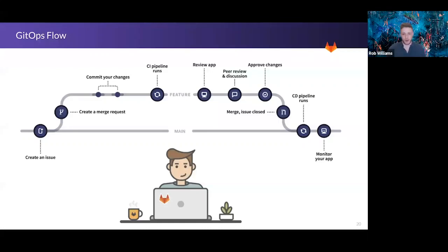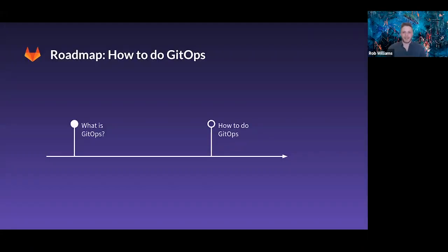The merge request allows for collaboration, peer review, discussion, and ultimately that gate of approval. After passing the review gate, you merge back into the branch, changes get enacted automatically onto the infrastructure, and you move back into that business-as-usual state. We've looked at the 'what' of GitOps — now we're looking at the 'how' to do GitOps.